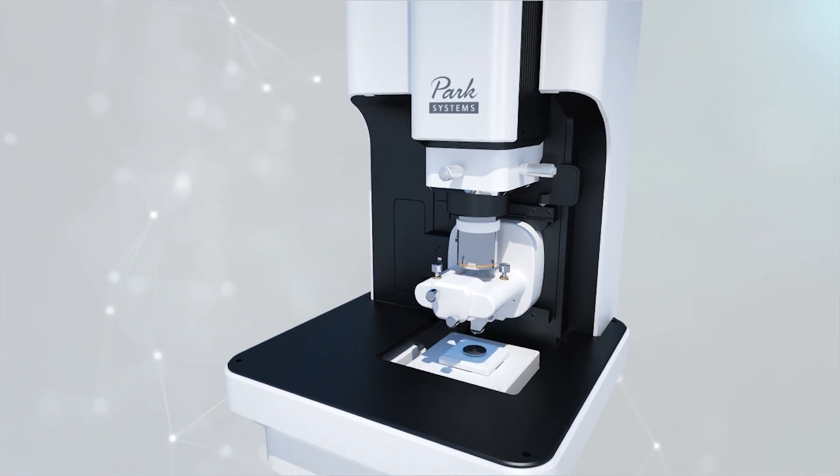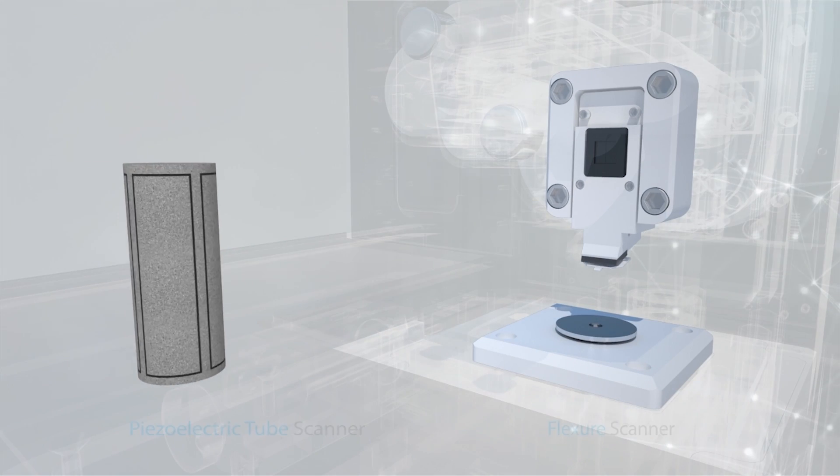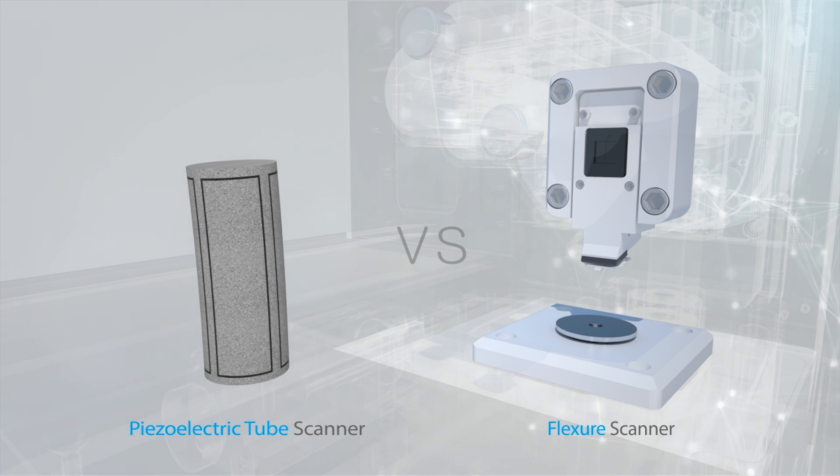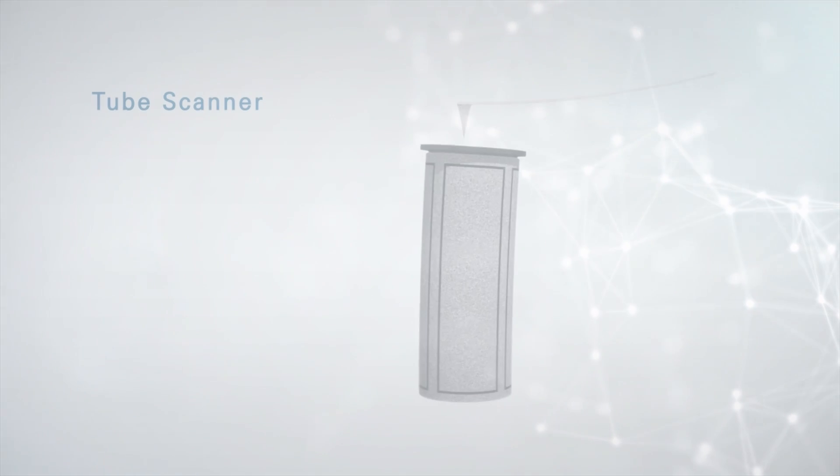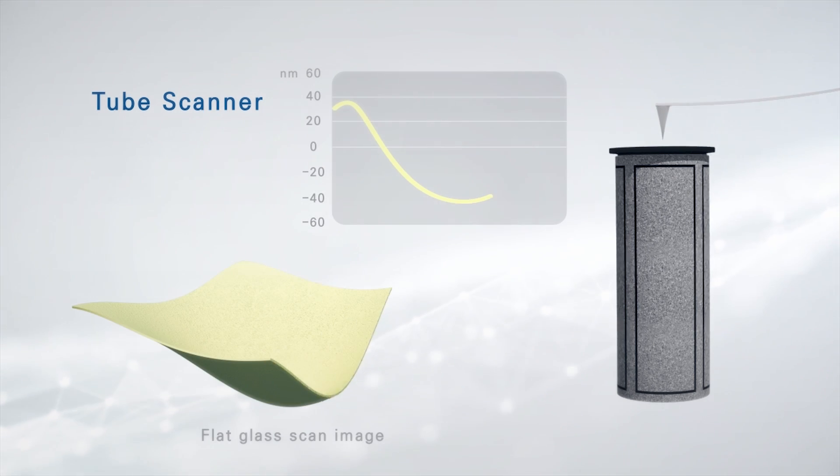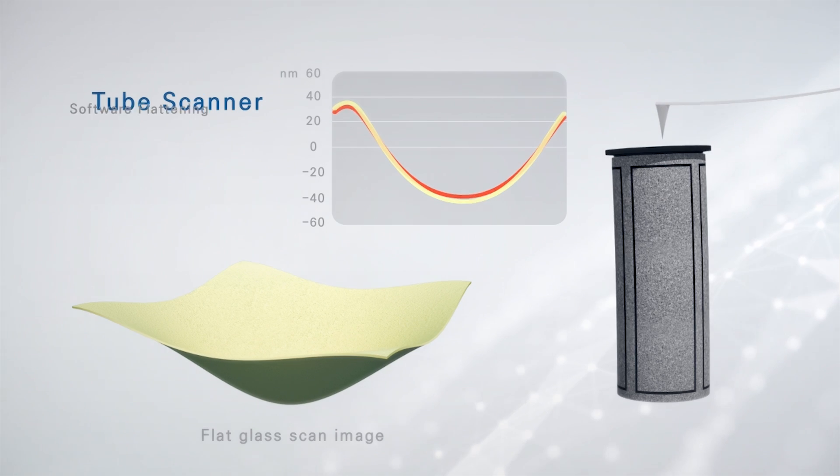The fundamental technological difference between Park Systems and other companies is in the structure of the scanner, which is the core of an atomic force microscope. The old atomic force microscope design used a tube scanner which relies on the tube's curvature to alter the relative positions of the probing tip and sample. But this method creates image distortion as the tube curves to the side and warps XYZ measurements.